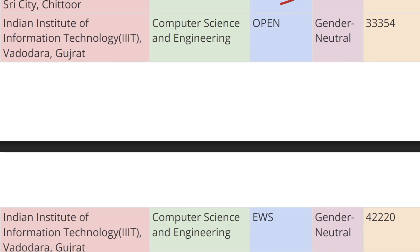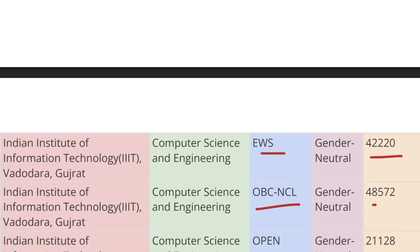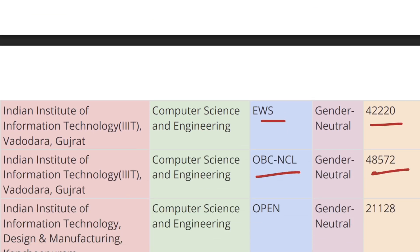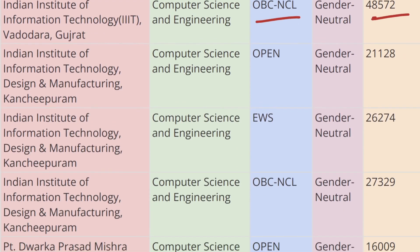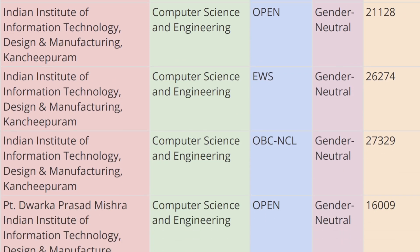Next we have IIIT Vadodara, Gujarat. For Open category the cutoff rank is 33,354 for Computer Science, for EWS category the cutoff rank is 42,220, and for OBC-CL the cutoff rank is 48,572.